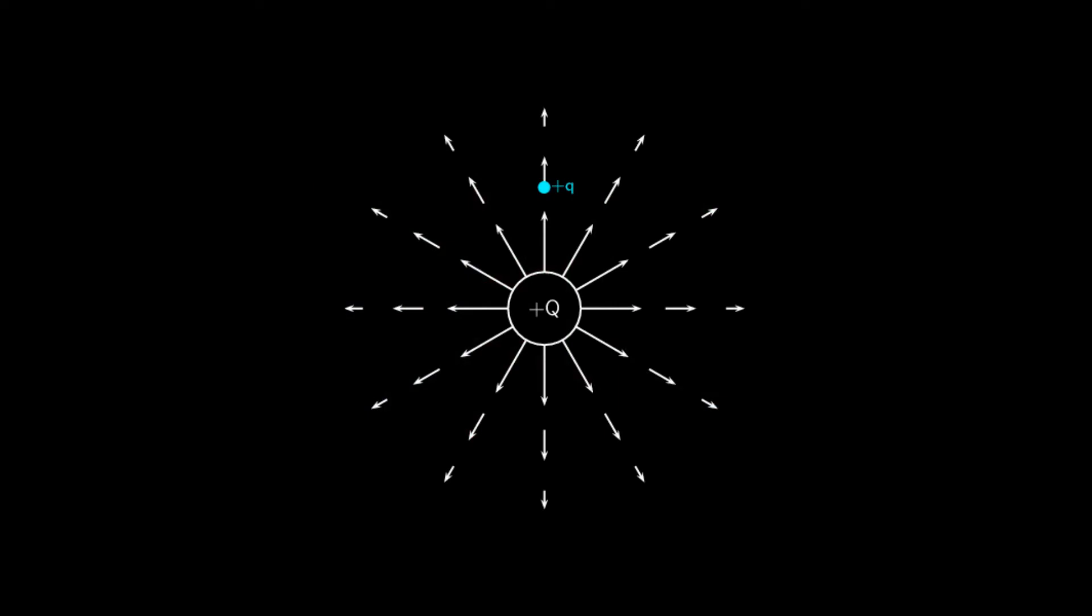So how do we find the strength of an electric field? Well, the strength of an electric field is tested by placing positive test charges around the source charge. Our test charge is such a small magnitude that it doesn't affect the electric field of the source. We use test charges to get a sense of the force that is experienced at a certain point. Our source charge is the capital Q and our test charge is the lowercase q.